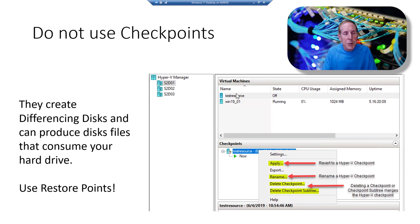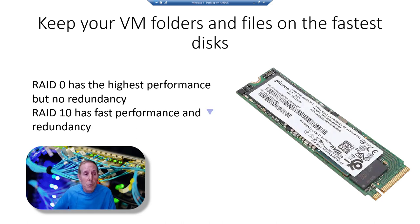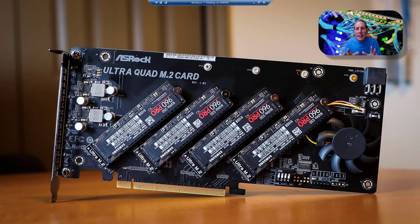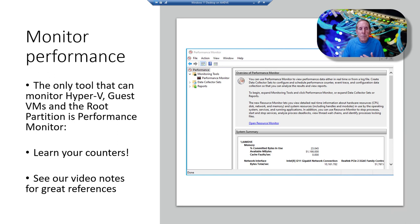Avoid using checkpoints — they create differencing disks that can consume your entire hard drive. Instead, use restore points, which are a great way to go back in time if needed, both in the root partition and in the guest. Keep your VM folders and files on the fastest disk possible. If you can use RAID 0, it gives you the highest performance but no redundancy. RAID 10 gives you fast performance with redundancy, but requires four hard drives — an excellent way to get the best performance. The only tool that can really monitor Hyper-V, guest VMs, and the root partition is Performance Monitor. Learn your counters for CPU, Hyper-V, memory, disk, and network.